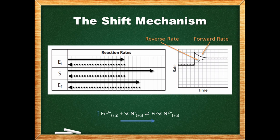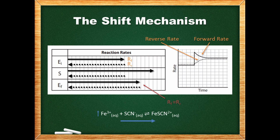The diagram and graph illustrate what is happening with the reaction. The forward rate is a solid line while the reverse rate is a dotted line. At the initial equilibrium EI, the forward rate RF and reverse rate RR are equal. The stress S causes an immediate increase in the forward rate while the reverse rate initially remains unaffected. The forward rate then decreases while the reverse rate increases until equilibrium is once again established. This final re-established equilibrium EF shows the forward and reverse rates as equal again, with a magnitude somewhere in between the initial and stressed rates.